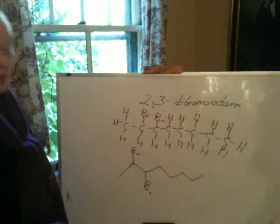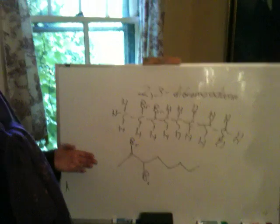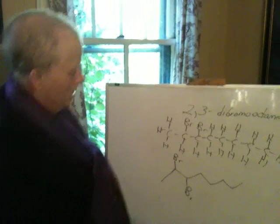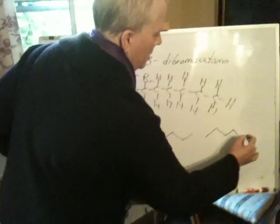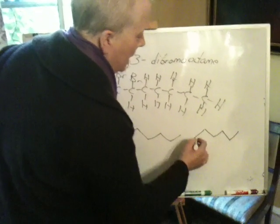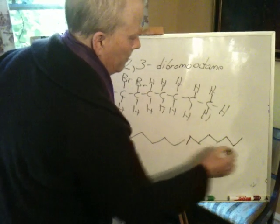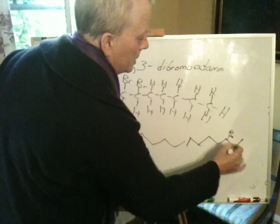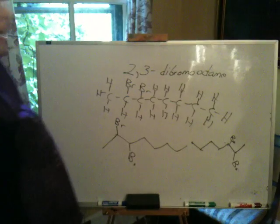And by the way, it doesn't have to be generated from a name — you could just take a structure out. You could say, I could draw this different ways. What are other ways I could draw 2,3-dibromooctane? I could go the other way — 1 through 8 with a bromine placed at each position. There are different ways this could be rotated, there's a lot of ways it can be drawn, there's not just one way. Practice that.